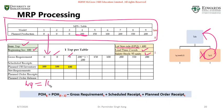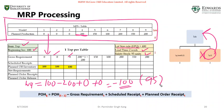For week four: planned on-hand from week three is 100, gross requirement is 200, no scheduled receipt, no planned order receipt yet — so I'm short by 100 units. I need an additional 100 units to satisfy the demand, plus 95 units as safety stock. So the net requirement is 195 units. We can also apply the net requirements formula: net requirement = gross requirement minus planned on-hand plus safety stock.